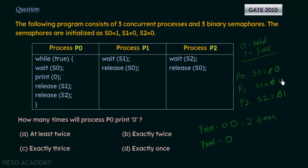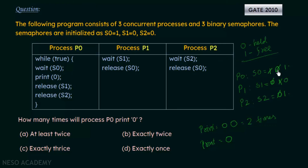When P1 executes, it sets S1 to 0 and releases S0, setting S0 equal to 1. Now P1 has completed. We have P0 with S0 equal to 1 and P2 with S2 equal to 1 — both are available. Unlike the previous case where P2 executed first, this time we consider P0 executing first. Since S0 is 1 — free — P0 enters, S0 is set to 0, and it prints 0 again — that's twice now. Then P0 releases S1 and S2.